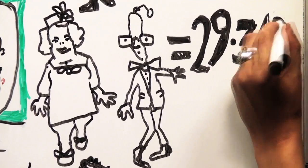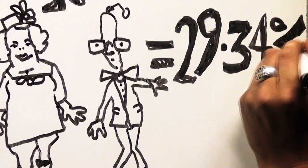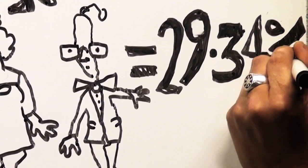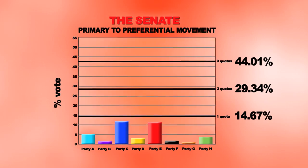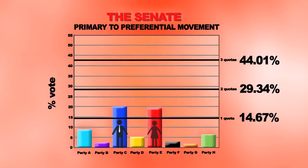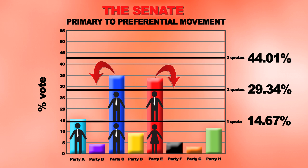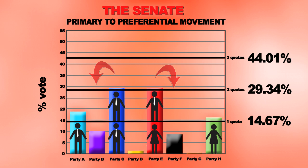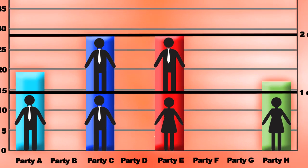The other major party gets two Senators — 29.34%. Typically, neither of these parties have enough votes to gain the last Senate seat. So their remaining votes are divided between the minor parties, as it's not in either of their interests to preference each other. This is how a minor party picks up the final seat.